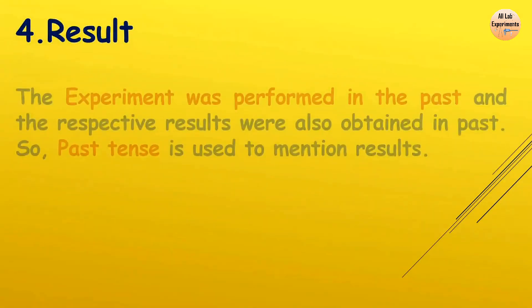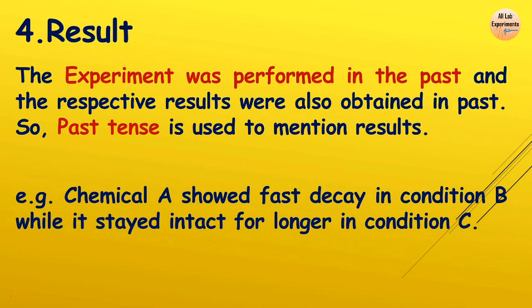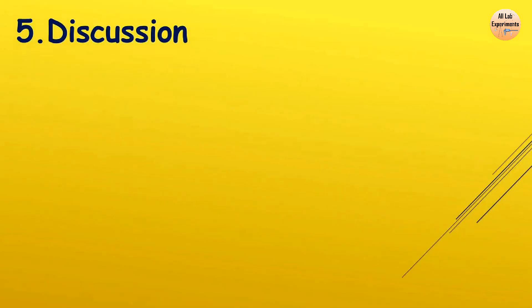After that we come to the results section. The experiment was performed in the past and the respective results were also obtained in the past, so past tense is used to mention these results. For example: 'Chemical A showed fast decay in condition B, while it stayed intact for longer in condition C.' The second trickiest part in a research paper is writing the discussion.